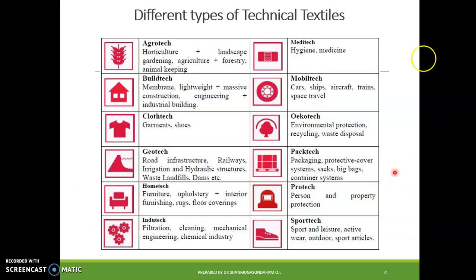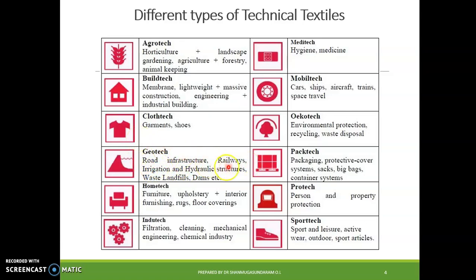Agro-tech is used for horticulture, landscape gardening, agriculture, forestry, and animal keeping. Build-tech covers membranes, lightweight and massive construction, and engineering and industrial building. Cloth-tech covers garments and shoes. Geo-tech applications include road infrastructure, railway, irrigation, hydraulic structures, waste landfills, and dams — areas where geotechnical textiles play a major role.